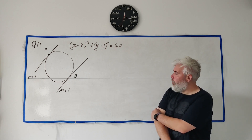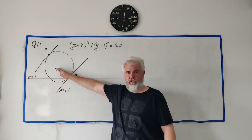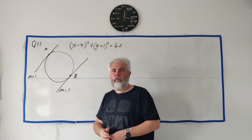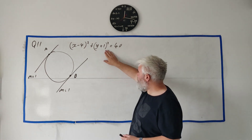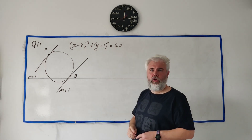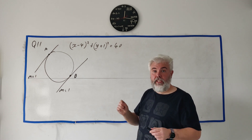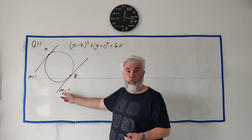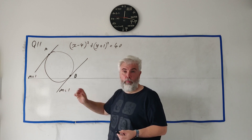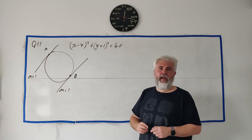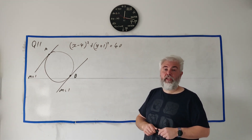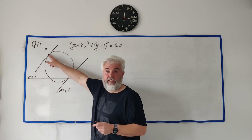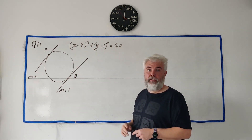In question 11 we're given a drawing of a circle with two tangents to it. We're given the equation of the circle and we're also told that the tangents are parallel and both have a gradient of one. They ask us to find the equation of the line AB.